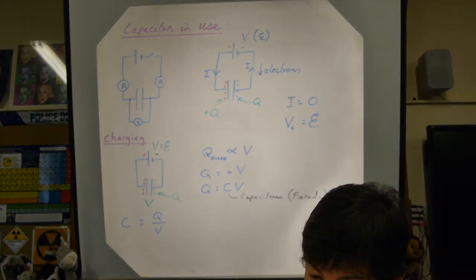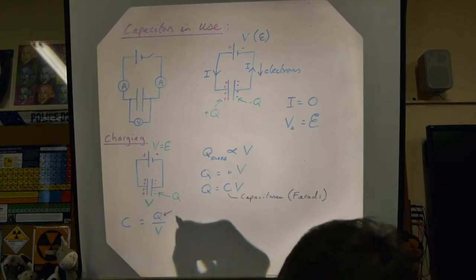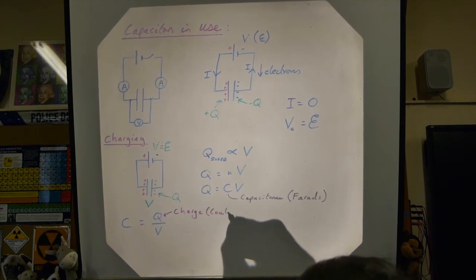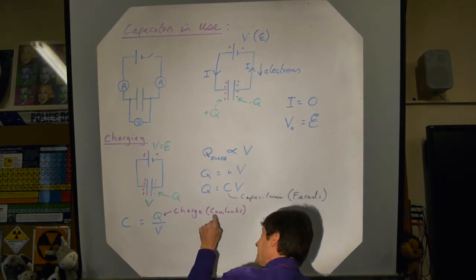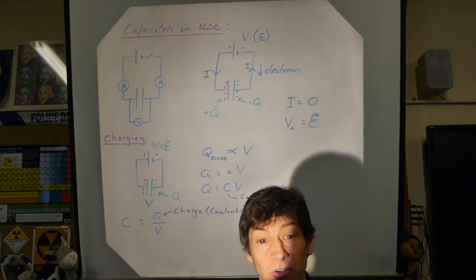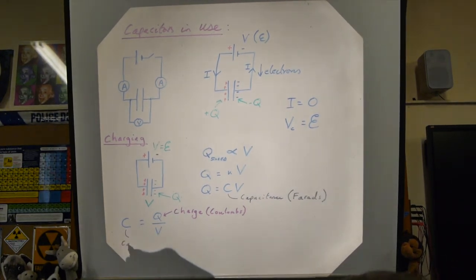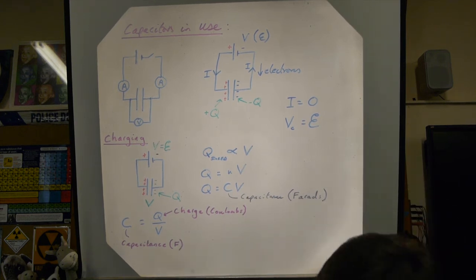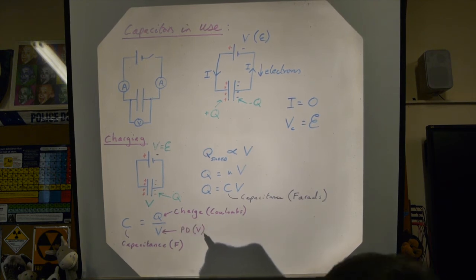In SI units, charge is measured in coulombs — so your answer will end with a C, which you must not confuse with C for capacitance. Capacitance is measured in farads (F), and potential difference is in volts (V).